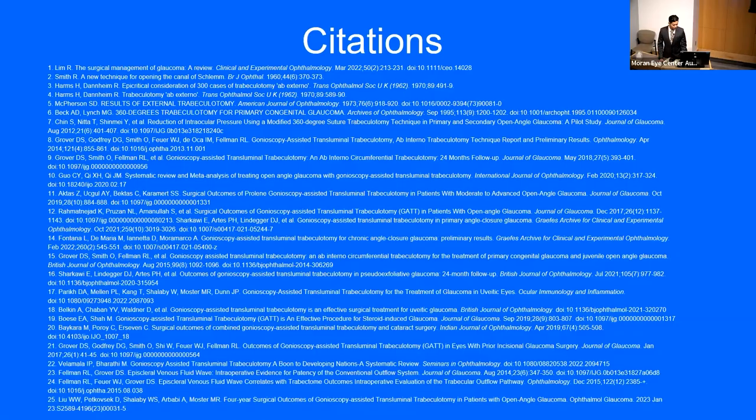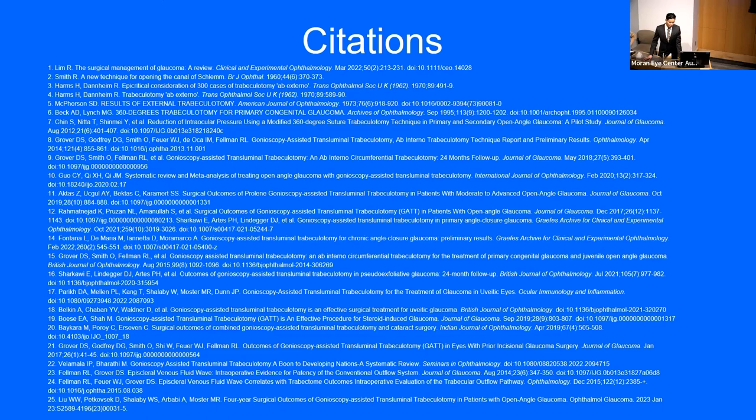Question from the audience: in the inclusion criteria, uncontrolled IOP is mentioned — how will that be defined for these patients? Answer: it's for patients who are already on maximum medical therapy and cannot get IOP lower than 21 with medications, and therefore needed to proceed with the GAT procedure.